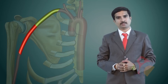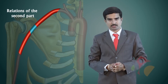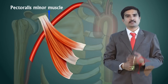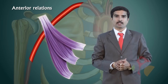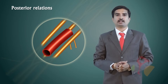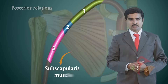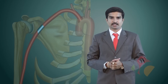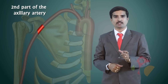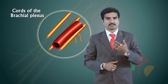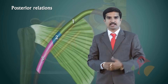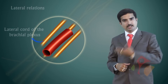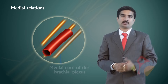Now let us see the relations of the second part. The pectoralis minor muscle divides the axillary artery into three parts. Anteriorly, the second part is related to the pectoralis minor muscle. Posteriorly, it is related to the posterior cord of the brachial plexus and the subscapularis muscle. Laterally, it is related to the lateral cord of the brachial plexus, and medially, it is related to the medial cord of the brachial plexus along with the axillary vein.